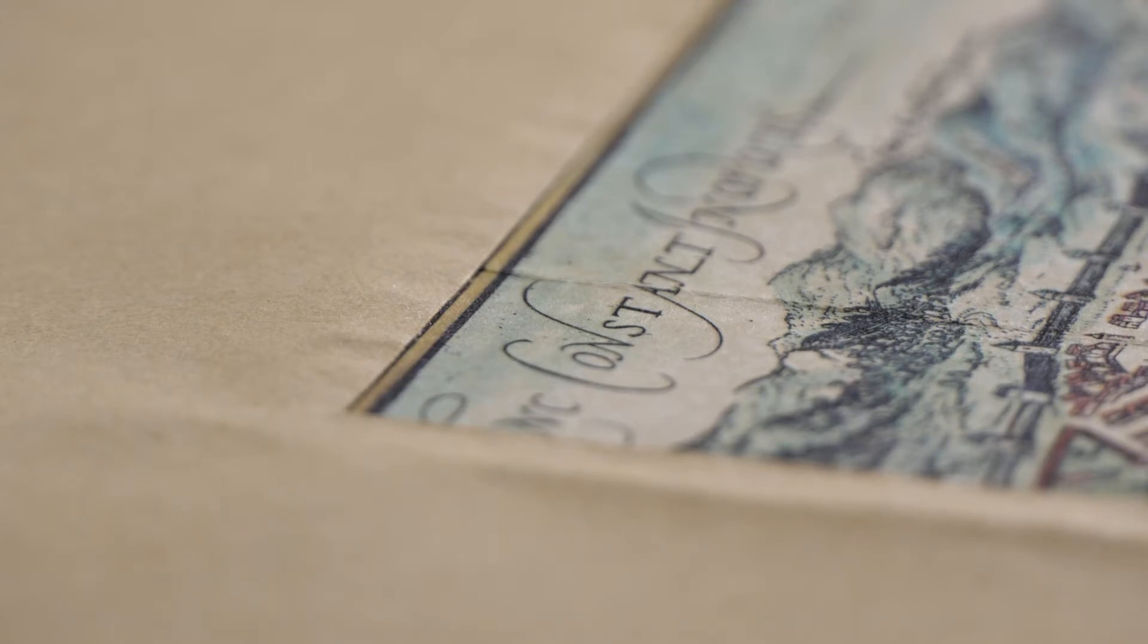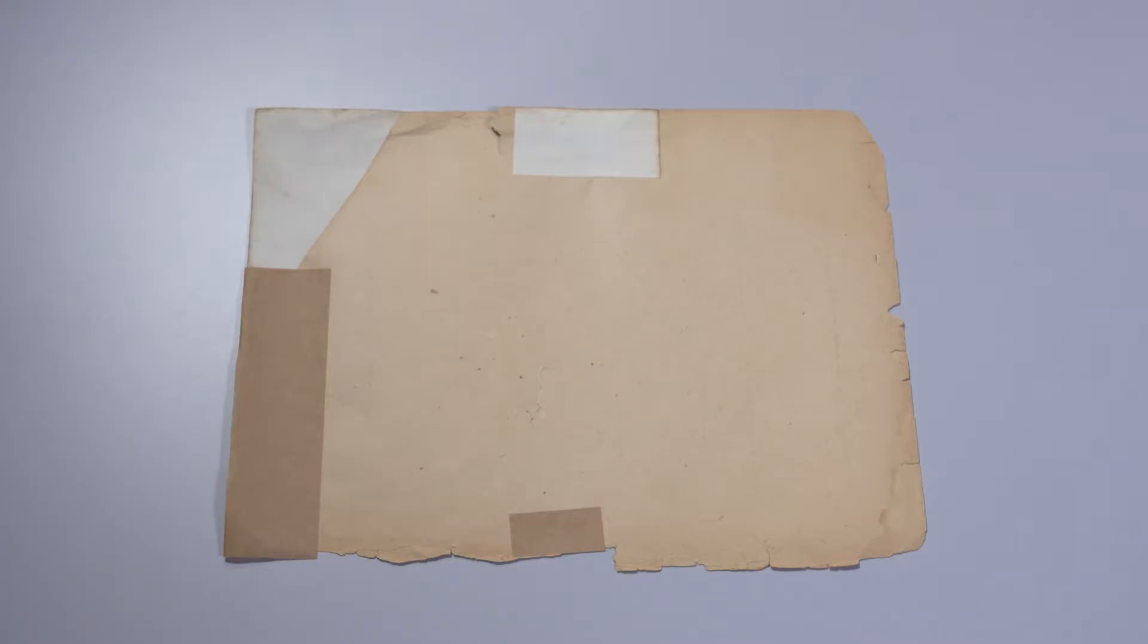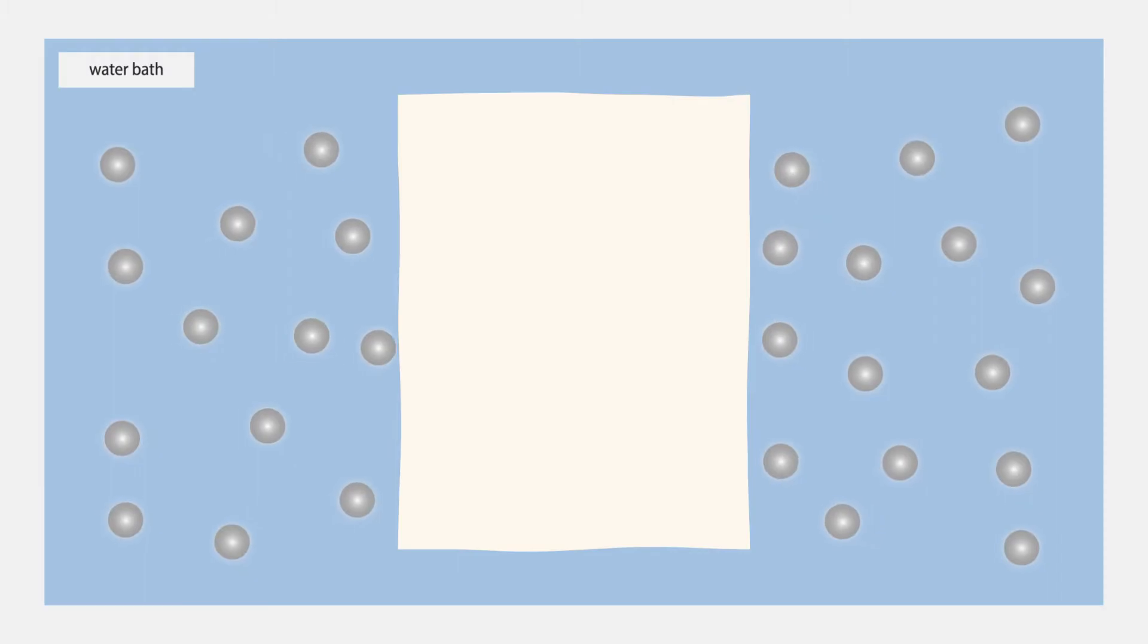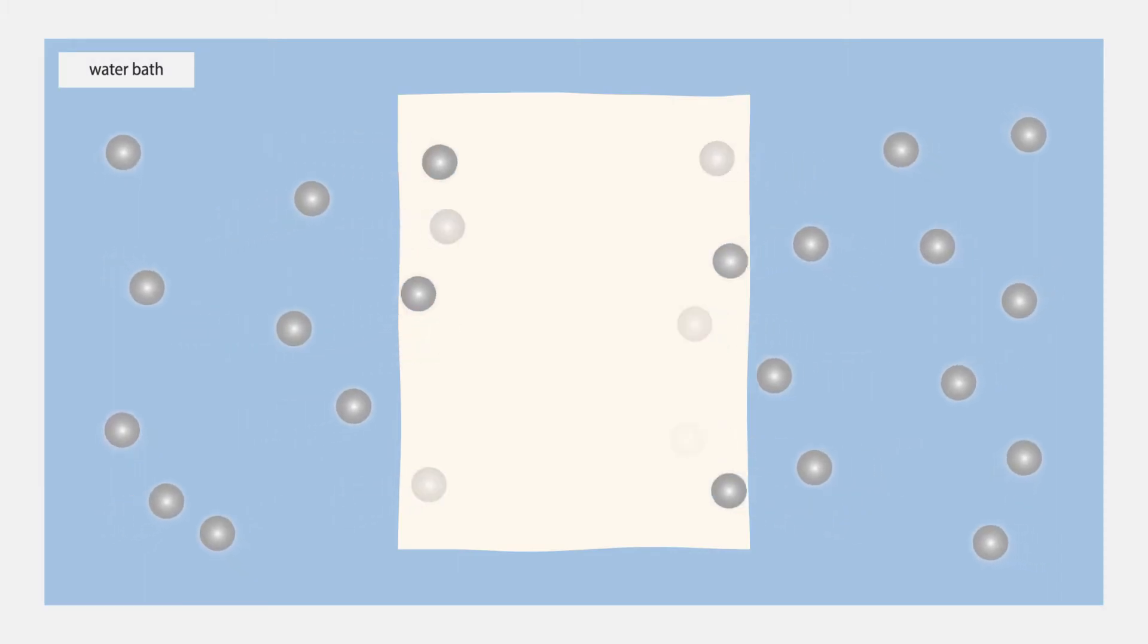Chemicals introduced into the object must be washed out again after treatment, as is the case with bleaching treatment or treatment with enzymes, for example. Alternately, aging resistant substances that extend the durability of the object are added to the paper, for example an alkali reserve.